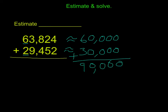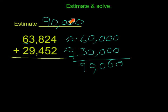Now we're going to add those up. Our estimate is going to be 90,000. Then we're going to come over here and add these together to come up with our answer, because we're supposed to estimate and then solve.